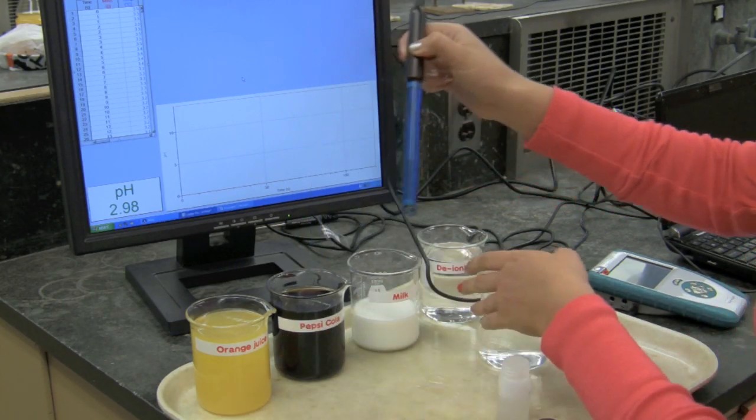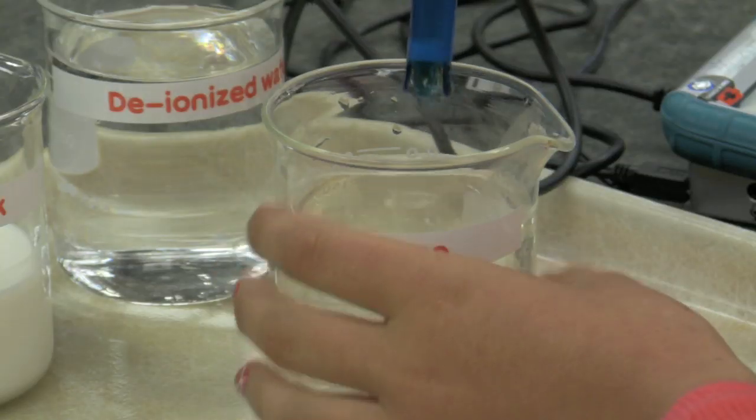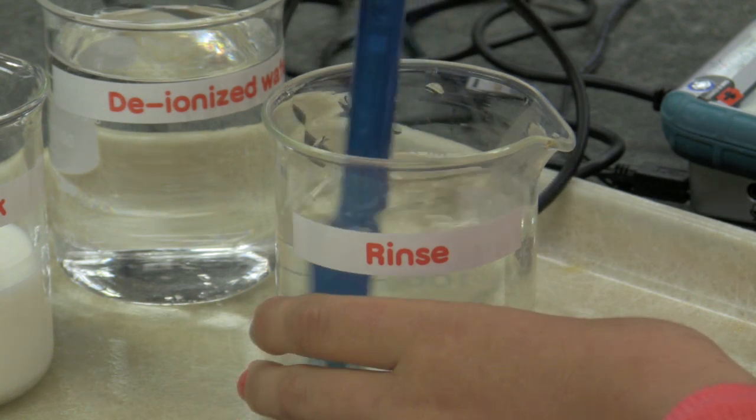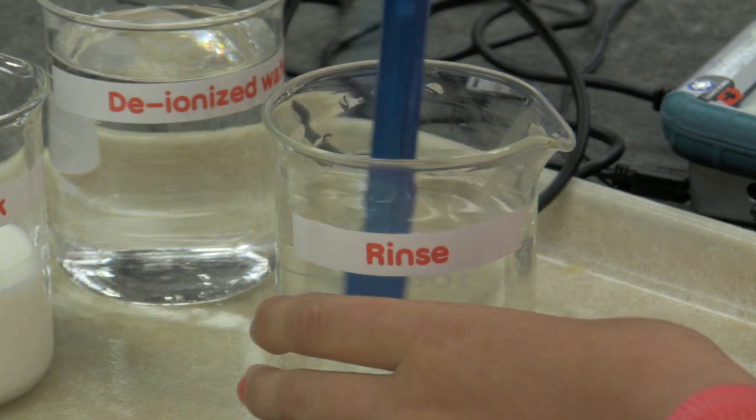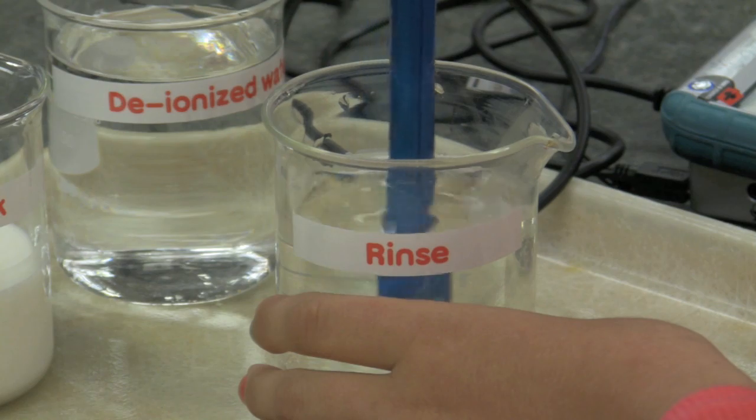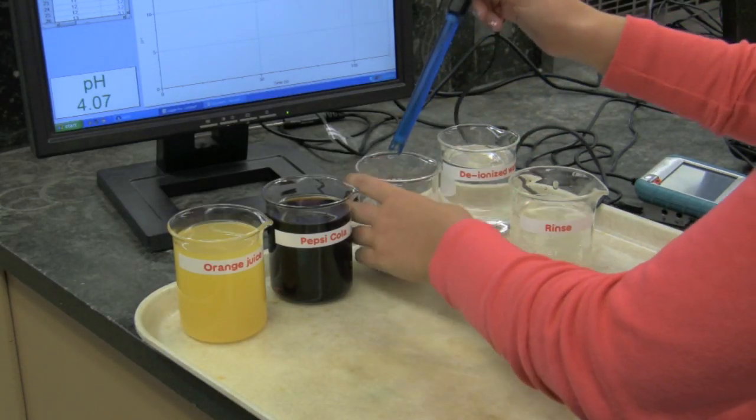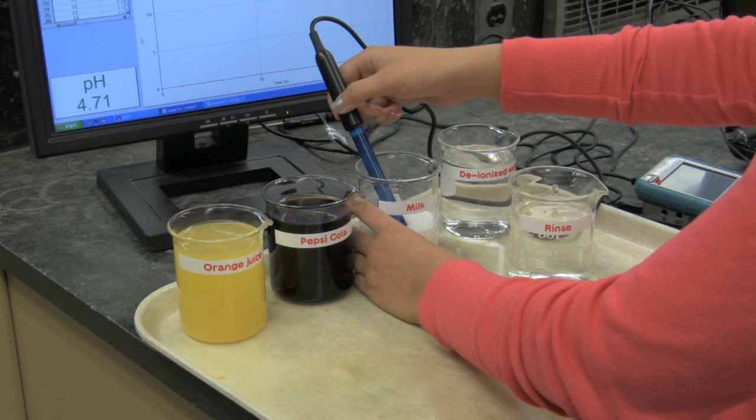She is removing the probe from the Pepsi-Cola and placing it in the rinse again. After a few seconds, she places the probe into a beaker of milk directly to the right of the beaker of Pepsi-Cola.